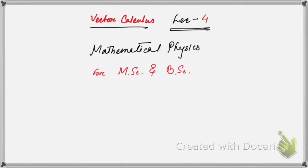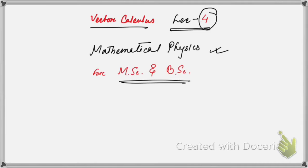Welcome to lecture 4 of Vector Calculus of Mathematical Physics for MSc and BSc students. Actually, this topic should be discussed after lecture 2, but in lecture 3 we discussed another topic. So before you watch this video, please watch lecture number 2. There we discussed polar coordinates and rotation of axis, and in this topic we are going to discuss properties of vectors under rotation.